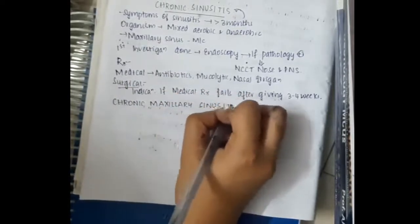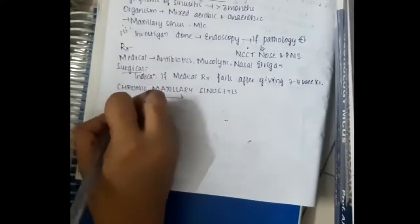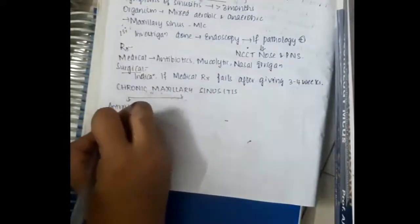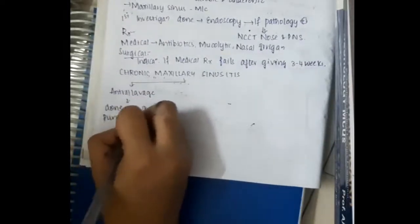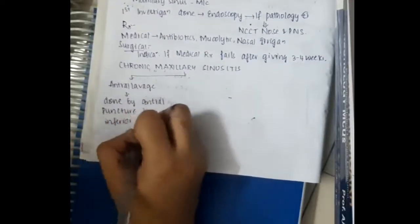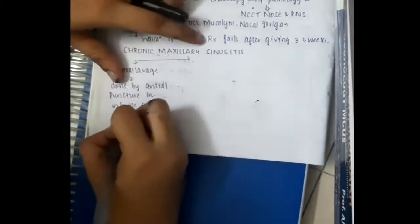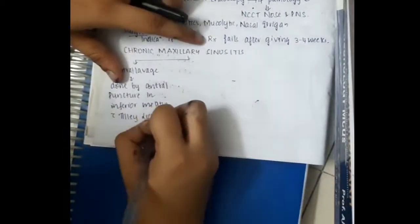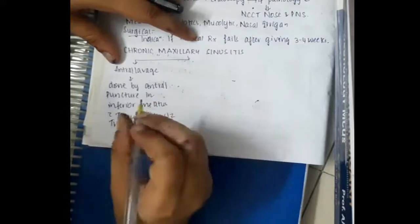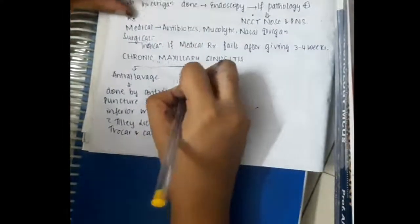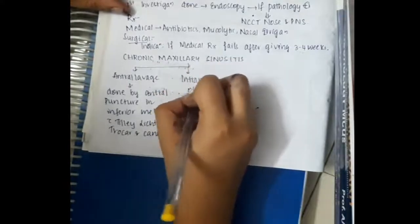Surgical treatment of maxillary sinusitis includes, we have antral lavage. First, then antral lavage is done by antral puncture in the inferior meatus with Tilley's trocar and cannula. With Tilley's trocar and cannula, we will do antral lavage.